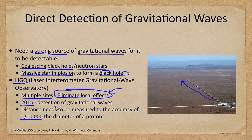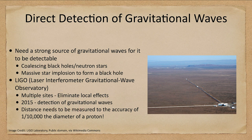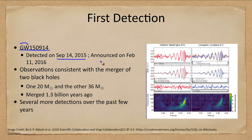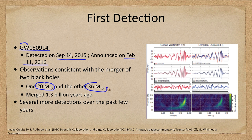In 2015 we had our very first detection. Our first gravitational wave event was known as GW150914 — gravitational wave event 2015 September 14th, the date it was detected. It was not announced until it had been confirmed nearly six months later in February. The observations were consistent with the merger of two black holes, one of 20 times the mass of the sun and the other 36 times the mass of our sun. Here are the observations from Hanford in Washington State and from Livingston in Louisiana, and we could match the two to confirm it was the same event.